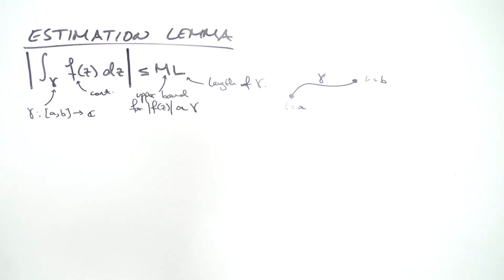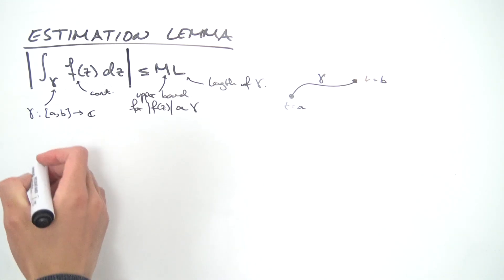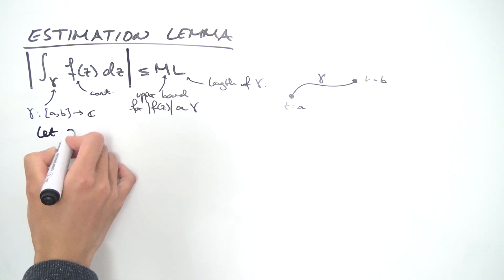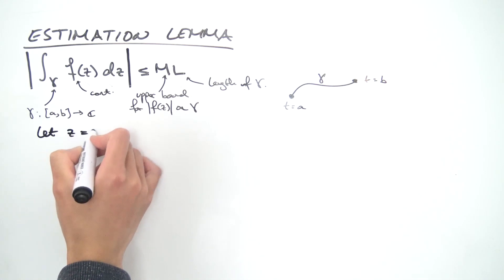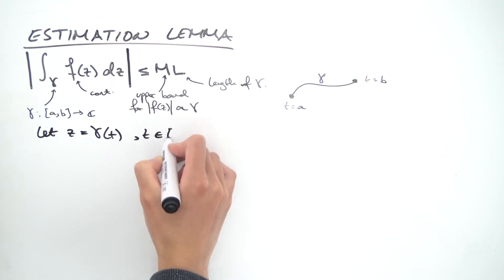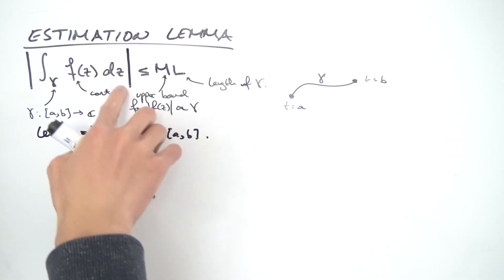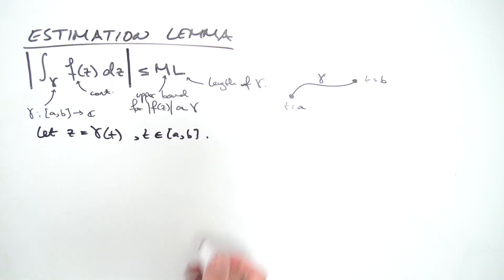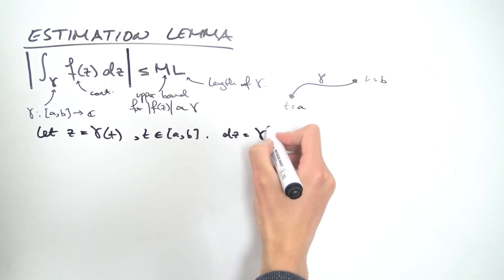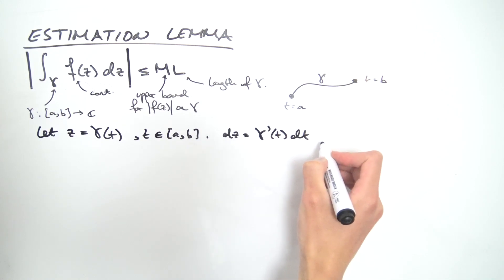How do we prove this? It's quite simple - all we need is a parametrization. Every z on the curve gamma can be written as gamma(t) where t ranges from a to b. Differentiating both sides, dz equals gamma'(t) dt.